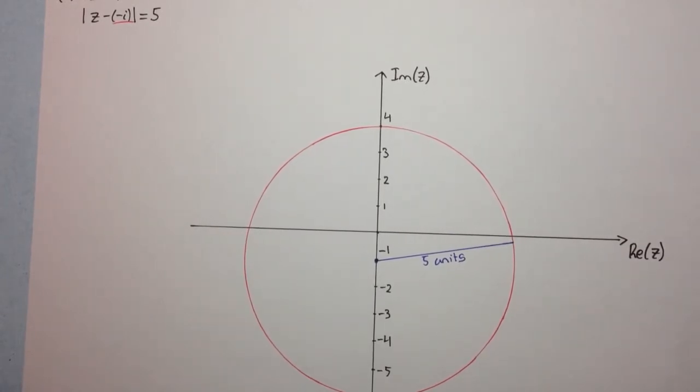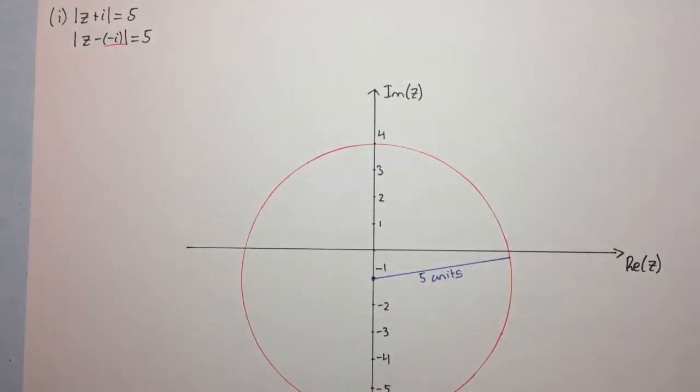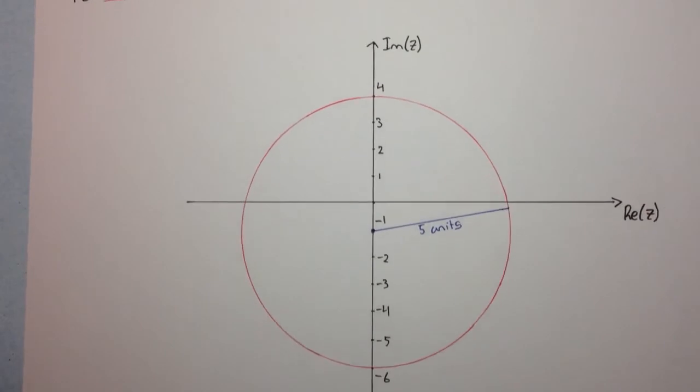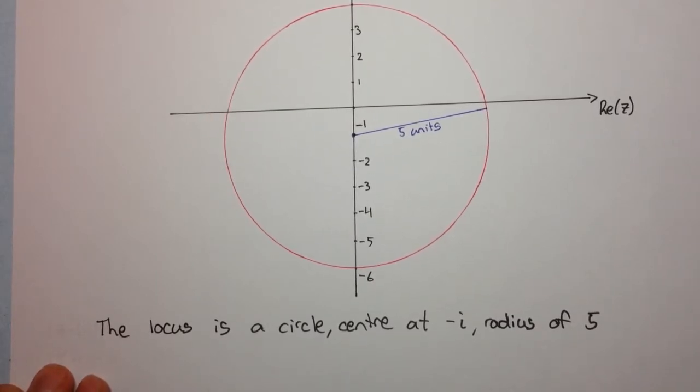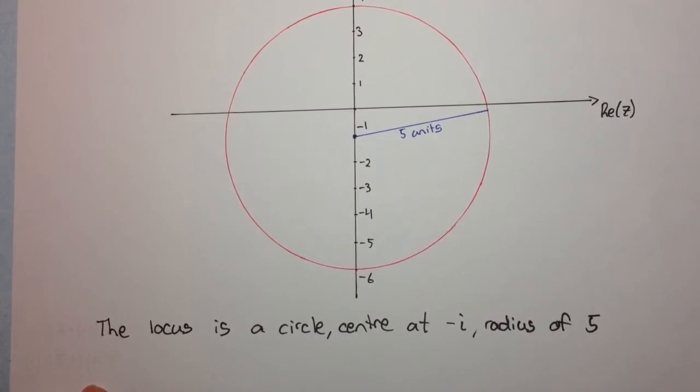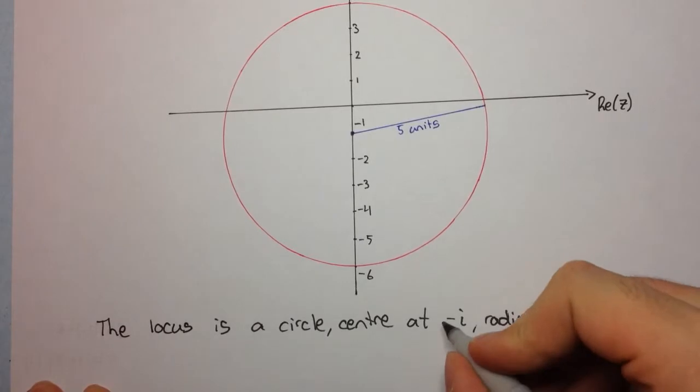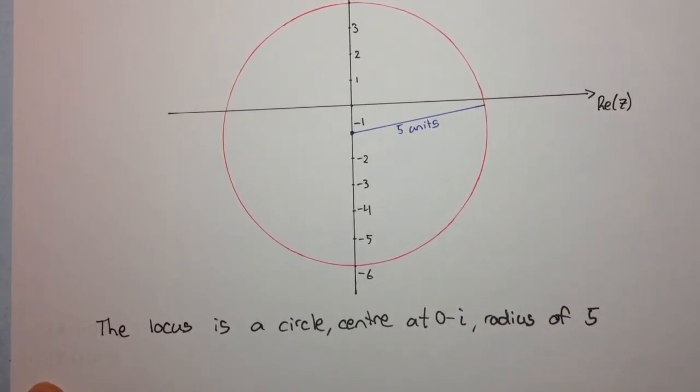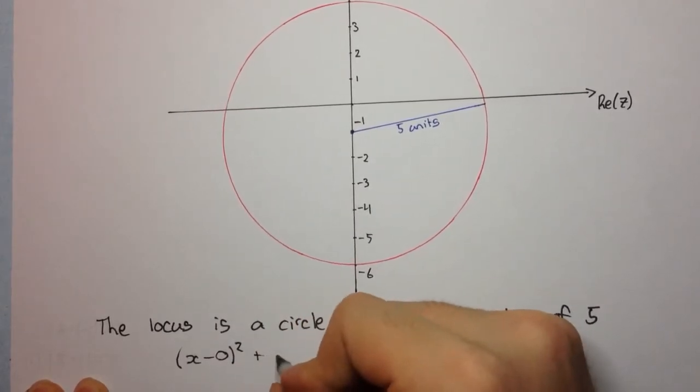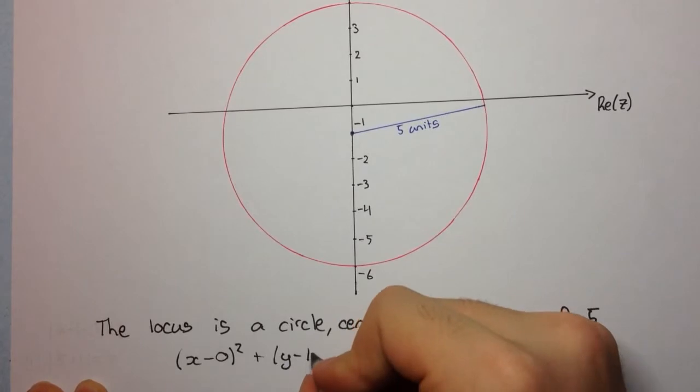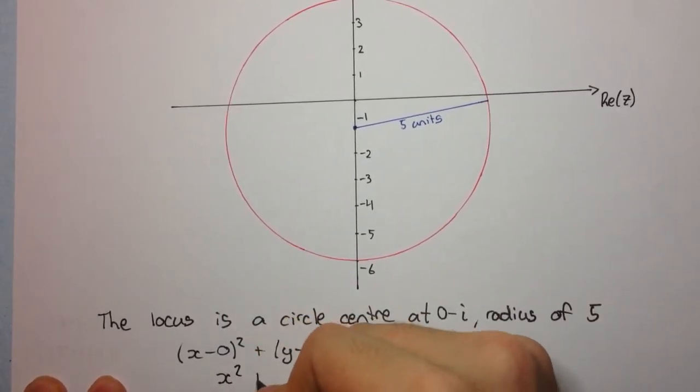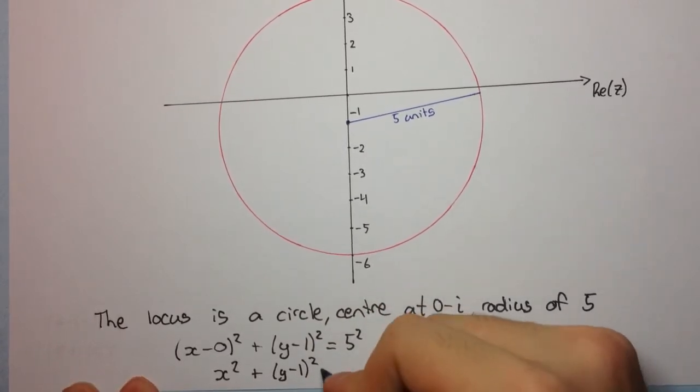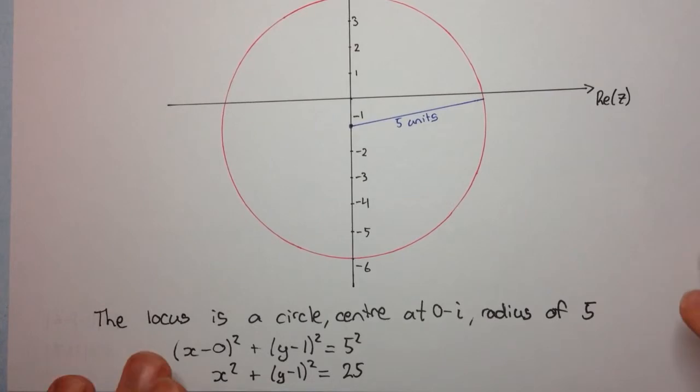And of course you can do this using an algebraic approach, but as you can see, this takes much less time. We just read off the center and the radius. Now, if we wanted to give a Cartesian equation, that's also fairly simple as well. So our center is at minus i, which of course is also thought of as 0 minus i. So our Cartesian equation is going to be x minus 0 squared plus y minus 1 squared is equal to 5 squared. And of course that is simply x squared plus y minus 1 squared equals 25. That's our Cartesian equation for this locus.